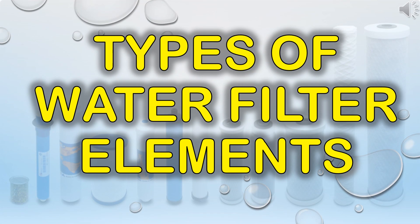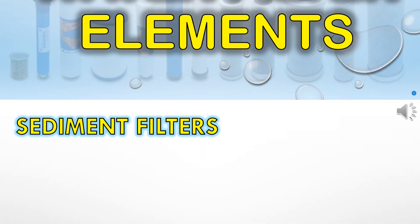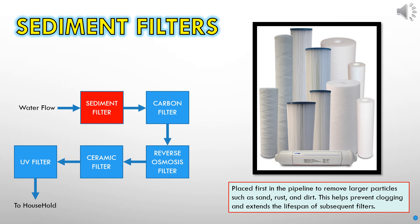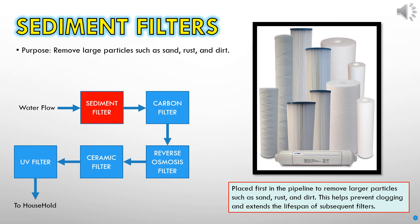Types of Water Filter Elements for Household Water Filtration System. Sediment Filter: This filtration stage serves the purpose of eliminating sizable particles like sand, rust, and dirt from the water.